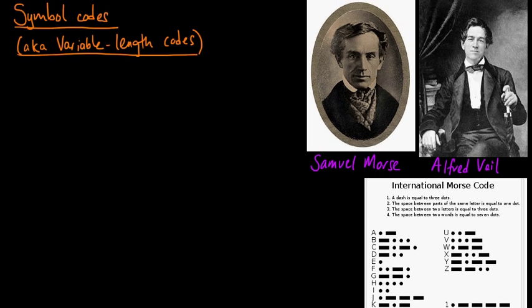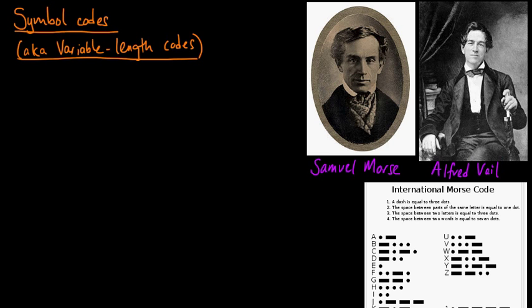Now you will notice I called it a variable length code and each of these code words has a different length. In fact, Alfred Veil chose the lengths of the code words so that more frequent letters would have shorter code words. If you have a very frequently occurring letter like E, this shows up very frequently in the English language, then you want to have a short code word for that letter.